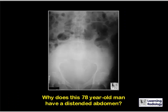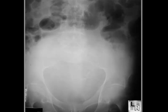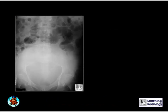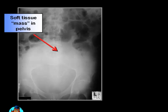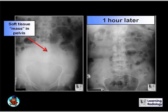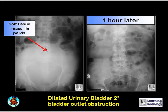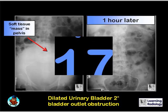Why does this 78-year-old man have a distended abdomen? There is a soft tissue mass in the pelvis displacing the loops of bowel superiorly, but an hour later a Foley catheter was inserted and the mass disappeared. What you're seeing in the first image is a dilated urinary bladder secondary to bladder outlet obstruction, urinary retention.